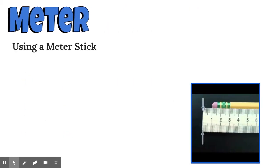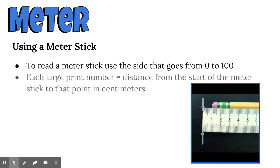The next piece is using a meter stick and how do we do it. To start, we always want to read the meter stick from the side that starts at zero and goes up to 100. Each bold line or bold print on the screen represents centimeters. The distance from the start to that point on the line is how far it is in centimeters.